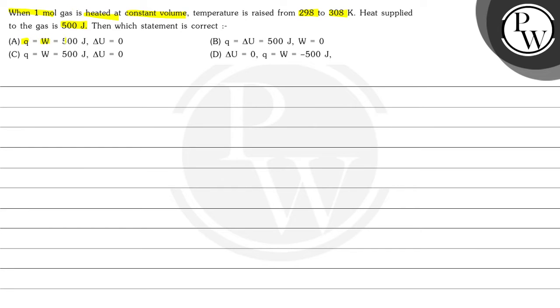Options are: Q equals W equals 500 Joule and Del U equals 0. Second is Q equals Del U equals 500 Joule and W equals 0. Next is Q equals W equals 500 Joule, Del U equals 0. And option D is Del U equals 0, Q equals W equals minus 500 Joule.